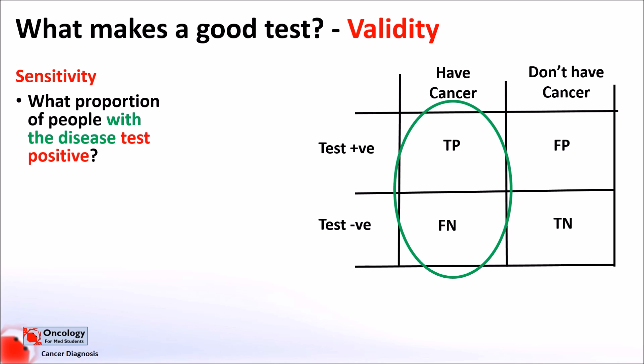Therefore, the sensitivity, which is normally described as a percentage, is calculated by taking the number of people who correctly tested positive and dividing them by the number of people who have the disease. A test with high sensitivity will pick up most cases of the disease. A test with low sensitivity may miss some people who have the disease.